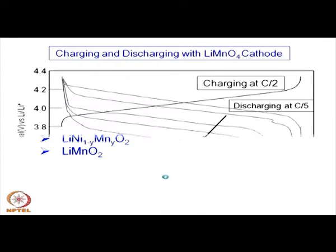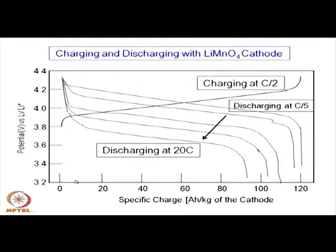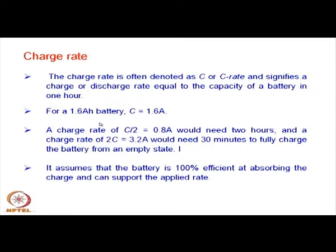These are the characteristics charge and discharge curves of the spinel structure LiMn2O4, which we have seen earlier. This is the charging characteristic and these are the discharge characteristics under different conditions of discharging. Discharging is normally done at a rate designated as C/2, C/5, or 20C.